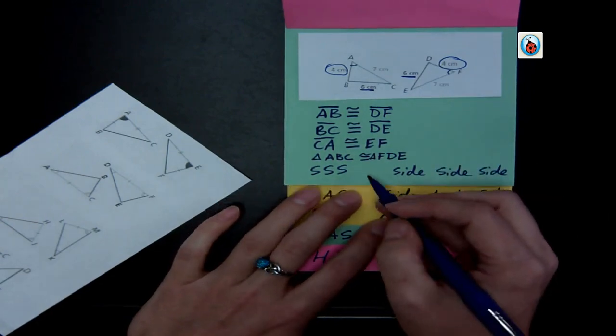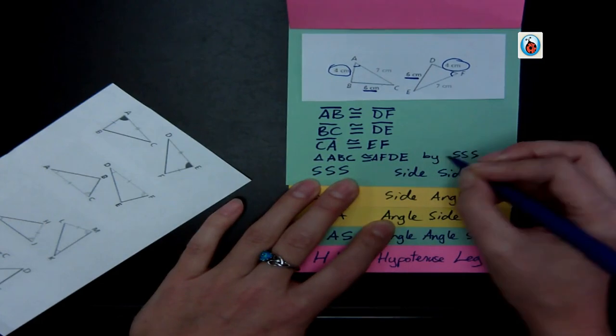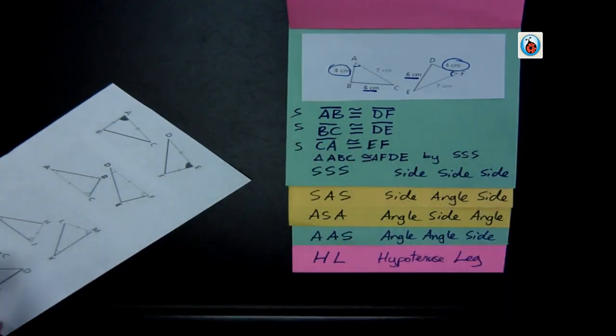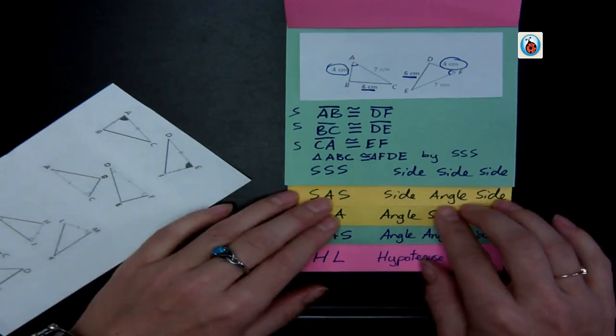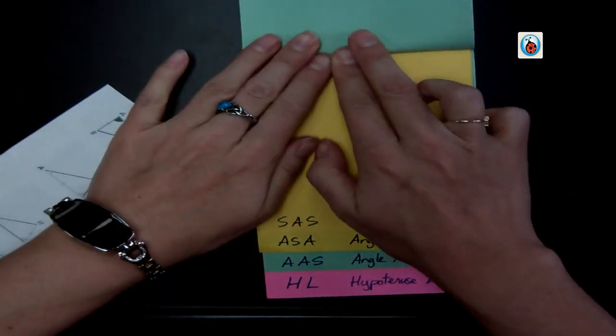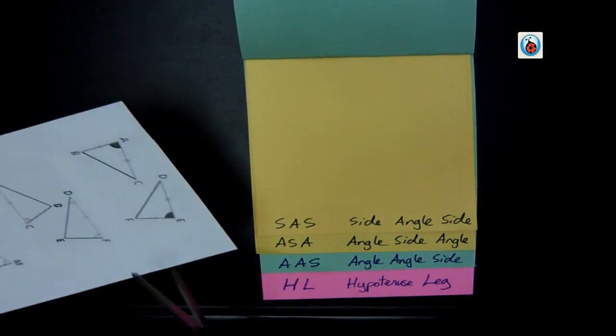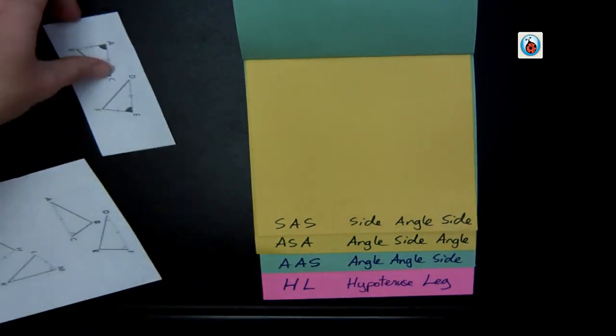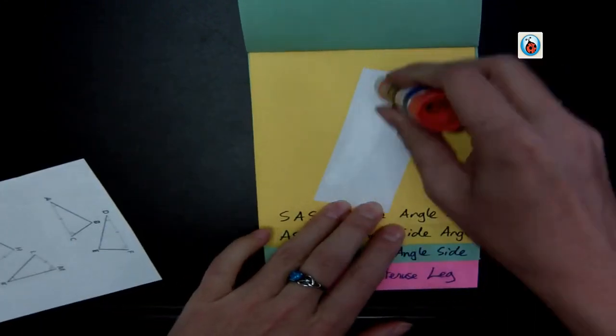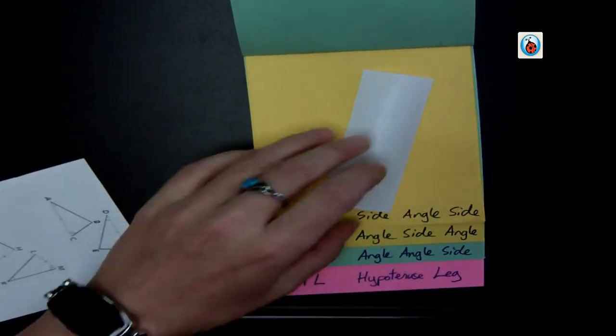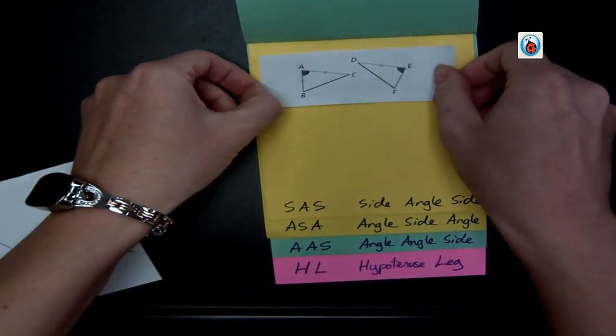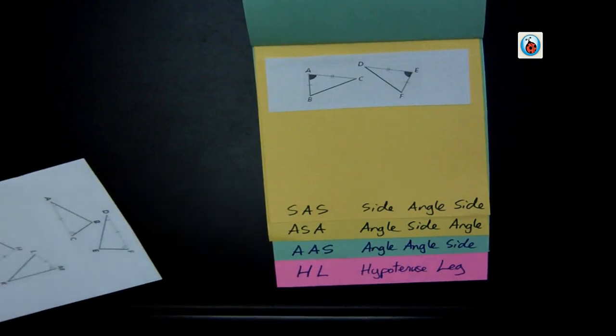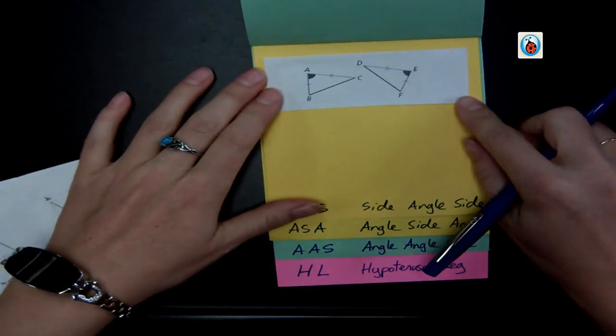And they are congruent by side, side, side, because it is three different sides of the triangles that are labeled for me. Alright, next we have side, angle, side. And so I'm going to cut and paste this triangle on.